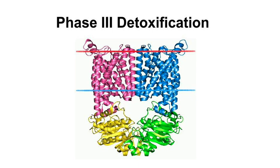Because the conjugated toxins from Phase II are water-soluble, they require specific transporters to be excreted out of the cell. Different transporter proteins move toxins from different areas of the body to either bile for elimination or urine for excretion.